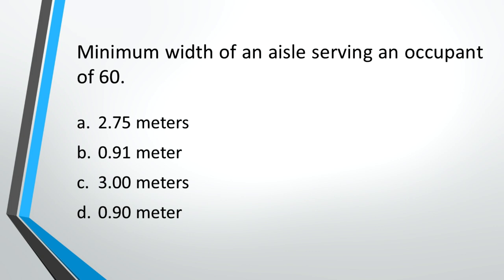Minimum width of an aisle serving an occupant of 60. A: 2.75 meters, B: 0.91 meter, C: 3.00 meters, D: 0.9 meter. Answer: B, 0.91 meter.